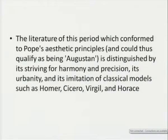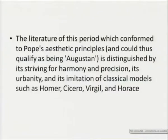The literature of this period which conforms to Pope's aesthetic principles — I had remarked that this was the growing of aesthetic principles which was coming into literature — could thus qualify as being Augustan, distinguished by striving for harmony of form and precision. It was a different form of aesthetics and different forms of technique which they were looking at. Literature became a tool of representation, and its urbanity and imitation of classical models such as Homer, Cicero, Virgil, and Horace.